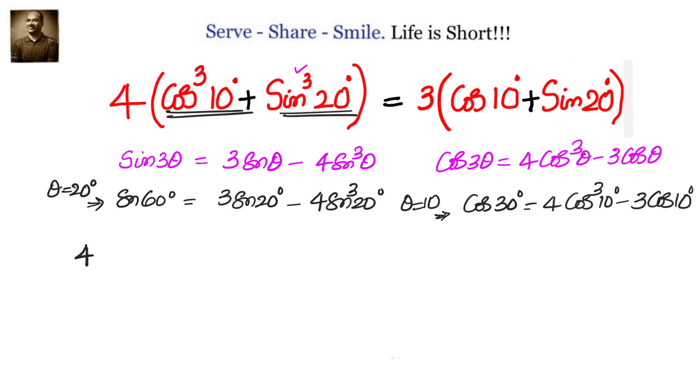So we will write down 4 into cos cube 10, from here is nothing but cos 30 plus 3 cos 10, divided by 4.